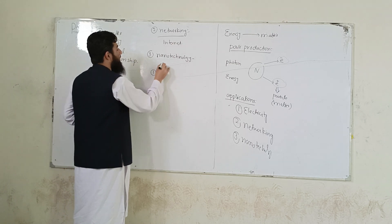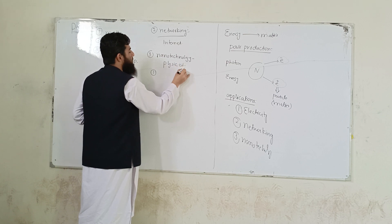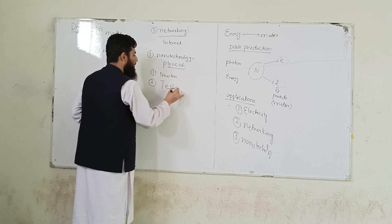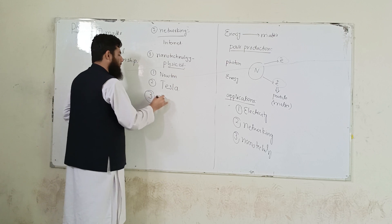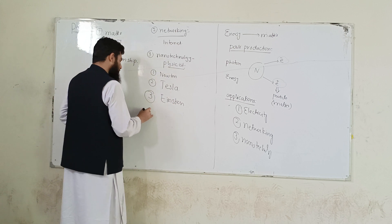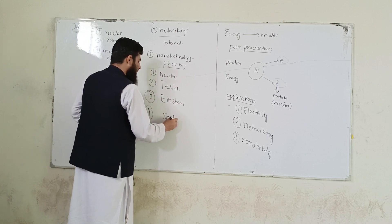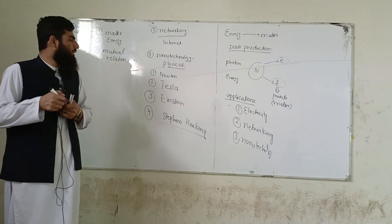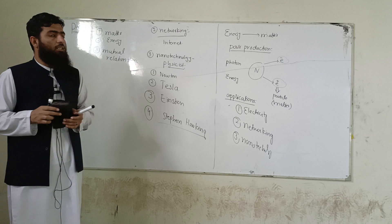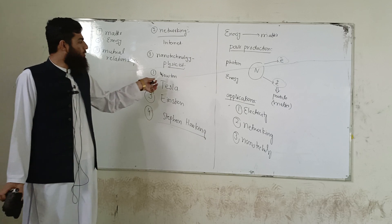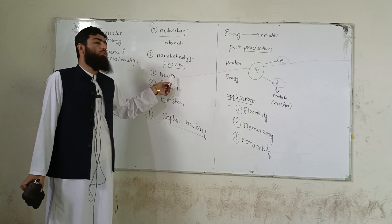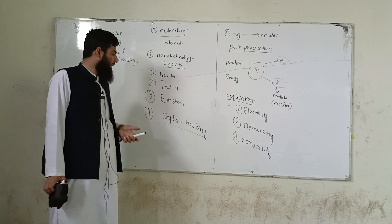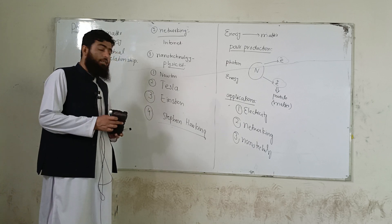Physics کے چار مشہور physicists کے نام یاد رکھیں: سب سے پہلے Isaac Newton، دوسرے نمبر پر Tesla، تیسرے نمبر پر Einstein اور چوتھے نمبر پر Stephen Hawking۔ دو طرح کا physics ہے — classical physics اور modern physics۔ Classical physics کے founder Newton ہیں اس لیے اسے Newtonian physics بھی کہتے ہیں، اور modern physics کے father Einstein ہیں۔